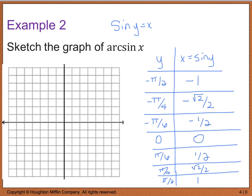If I go ahead and plot all of these points — my y values go from negative pi over 2 to pi over 2, my x values go from negative 1 to 1 — at negative pi over 2 I end up with negative 1, at negative pi over 6 I end up with negative 1/2, at 0 I have 0, and at pi over 2 I have 1. What you should notice is you get a curve that looks like this — and this is your inverse sine function.